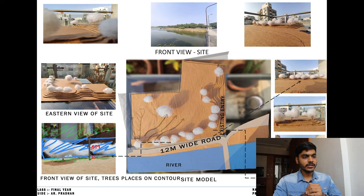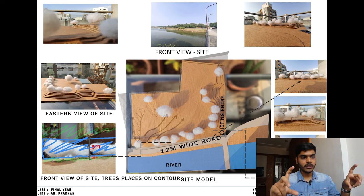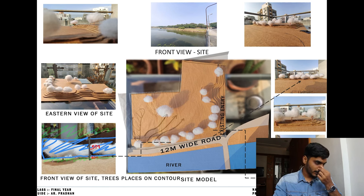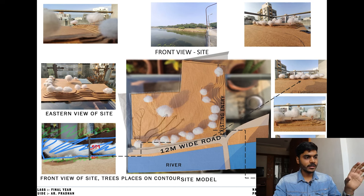This is the zoning and site model I did, just to understand the ideology I can use to construct my design. Then we can see the eastern view, front view, and western view, and also the trees which block the view for the first to second floors.